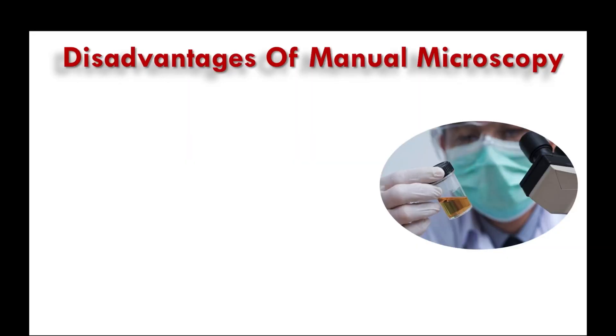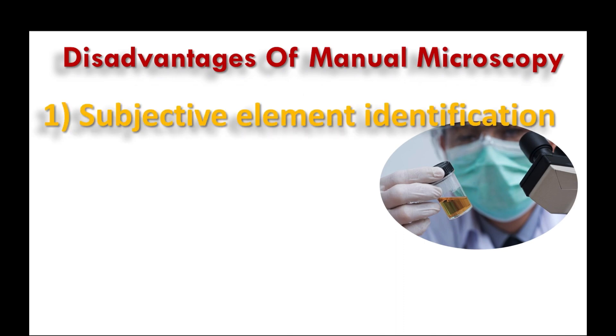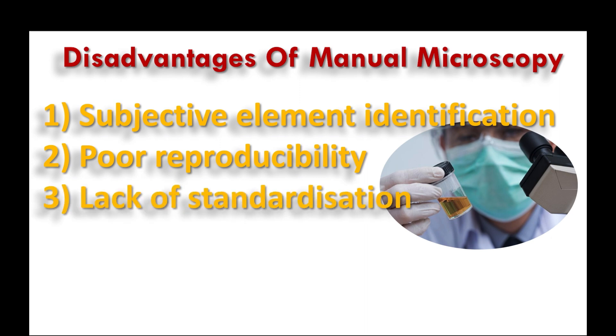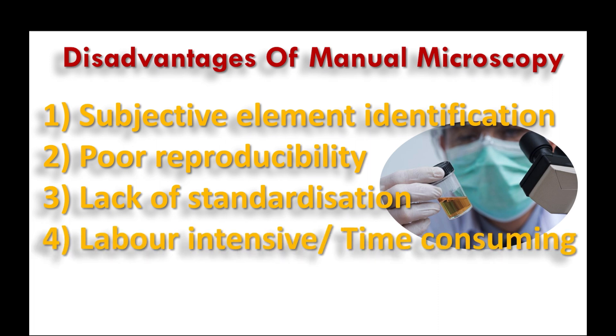An important question to consider for changing your laboratory practice is: why should you move from a manual method to a semi-automated or automated urine analyzer? There are four disadvantages of using a manual method: first, subjective element identification; second, poor reproducibility; third, lack of standardization; and fourth, it is time-consuming and labor-intensive. All of these are technician-dependent limitations.